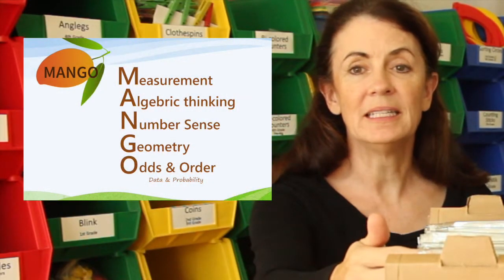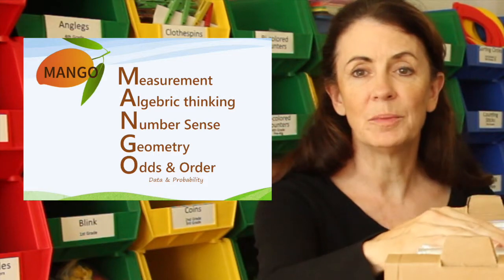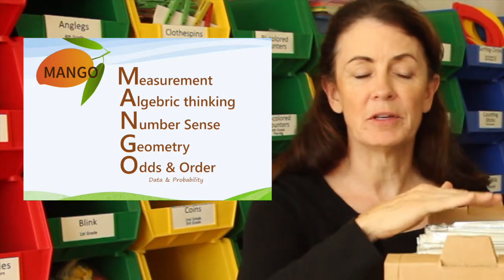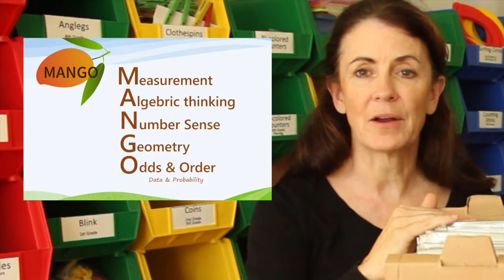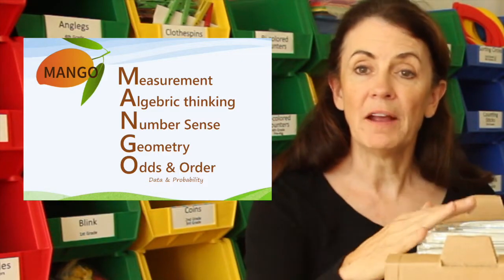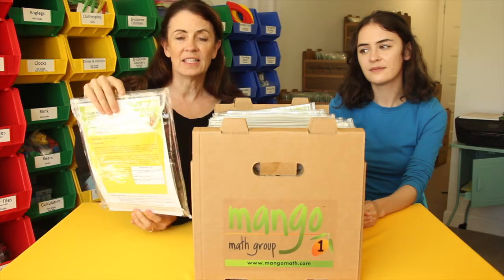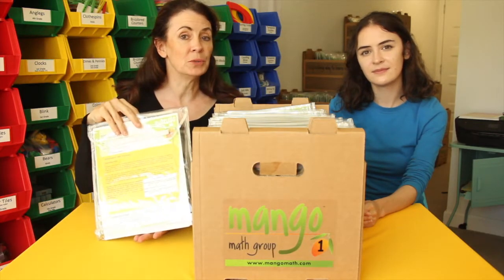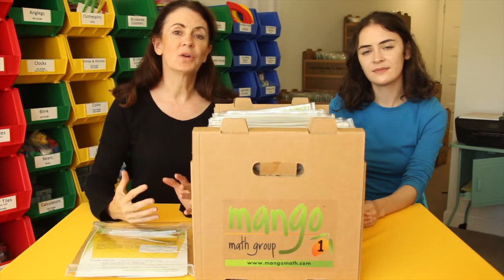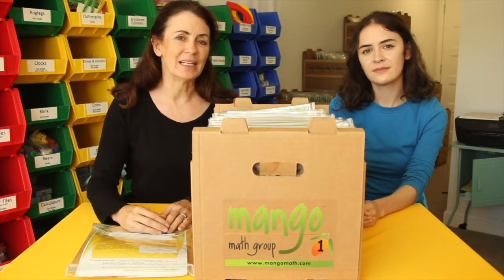The Mangomath kits are set up the same way in which we have measurement at the beginning with algebraic thinking next, number sense, geometry, odds and order. We follow the acronym of MANGO. They don't have to be used in that order, it's just the way we set them up. Each individual package has all the supplies for up to four students. We like them to be in small groups so that they communicate and collaborate together.